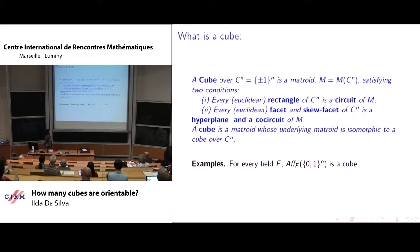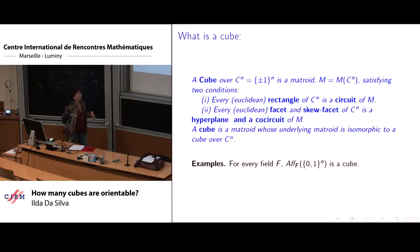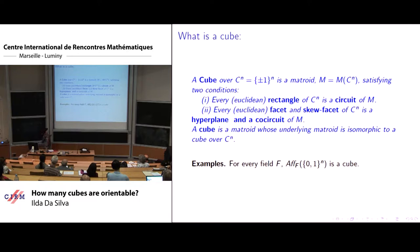I'll start by defining what is a cube. A cube is a matroid over C^n, where C^n is the set of plus minus one vectors. The matroid must satisfy two conditions. One is that every rectangle of C^n, meaning a Euclidean rectangle as a rectangle of R^n,